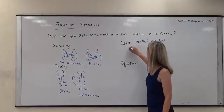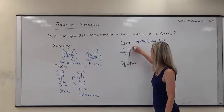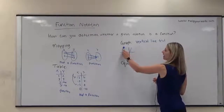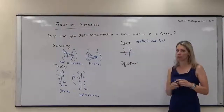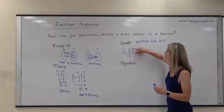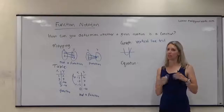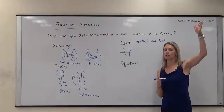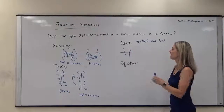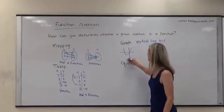For example, let's say I have a graph with a nice parabola. I can drop a vertical line anywhere in the graph and never hit the graph more than once. We do have to be careful with certain graphs, because sometimes the curve gets steep really quickly, but as long as it's changing, every vertical line hits the graph exactly once. In this case, we would say that this is a function.